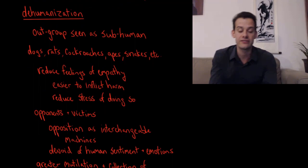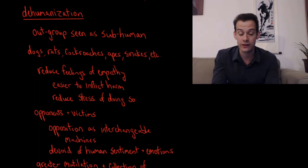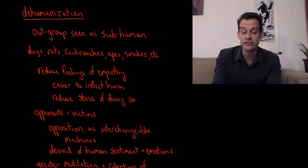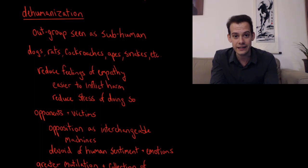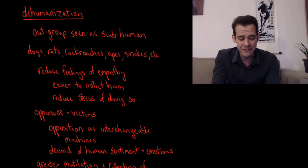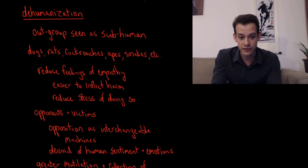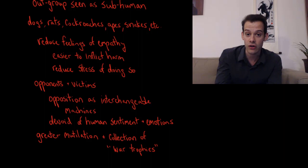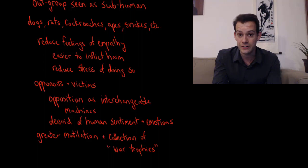At the extreme of this behavior we see dehumanization, where members of the outgroup are seen as less than human. History is filled with examples of outgroups being likened to dogs, rats, cockroaches, apes, snakes, or locusts. This dehumanization reduces our feelings of empathy towards outgroup members, makes it easier to inflict harm on them, and reduces the stress of doing so. This was shown quite well in the Black Mirror episode 'Men Against Fire.' We have a tendency — especially in times of war — to see the enemy or even victims as interchangeable and devoid of human sentiment and emotions. This tendency toward dehumanization is associated with greater mutilation of enemies in wartime and the collection of war trophies such as ears, skulls, or teeth.